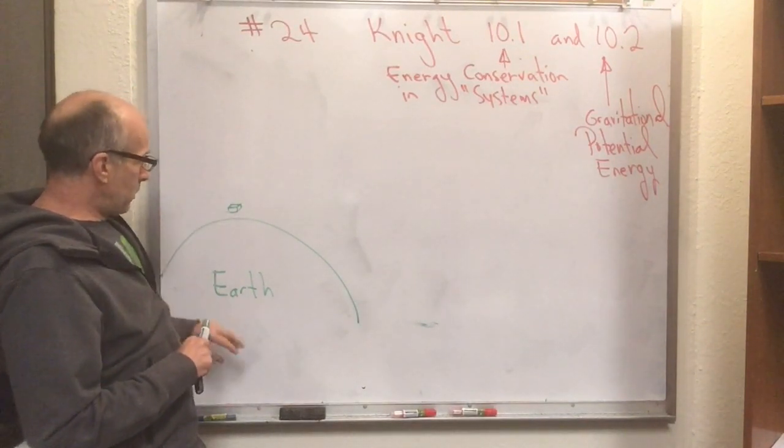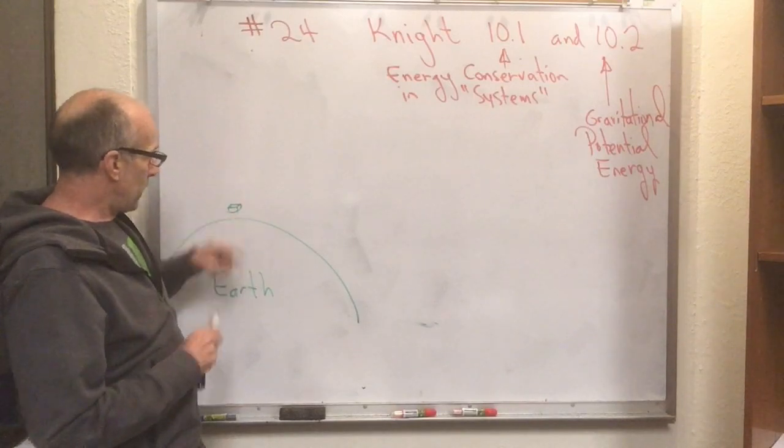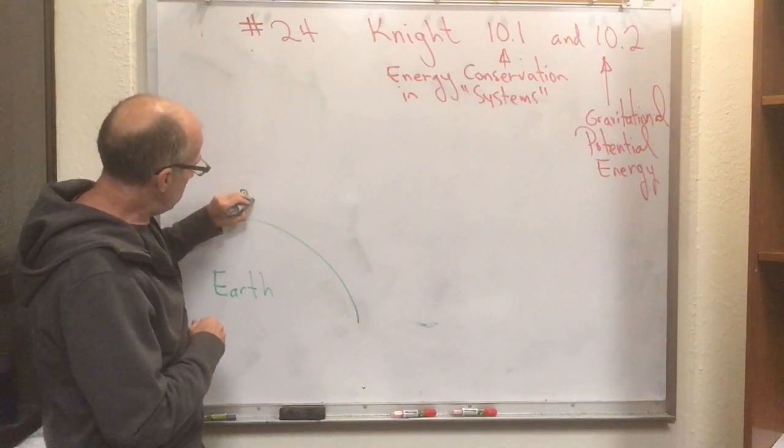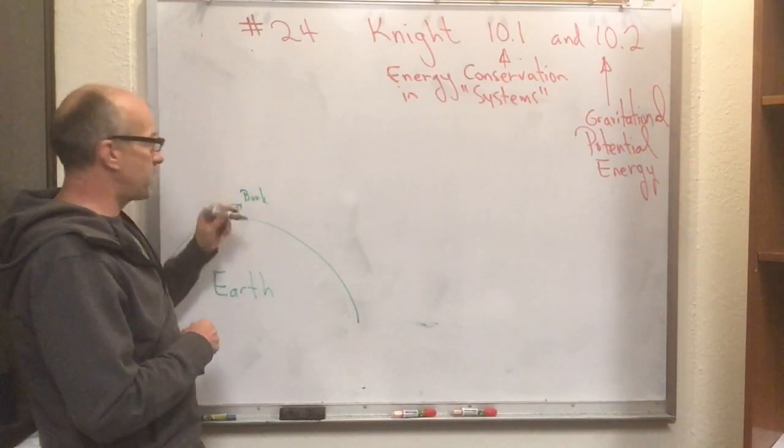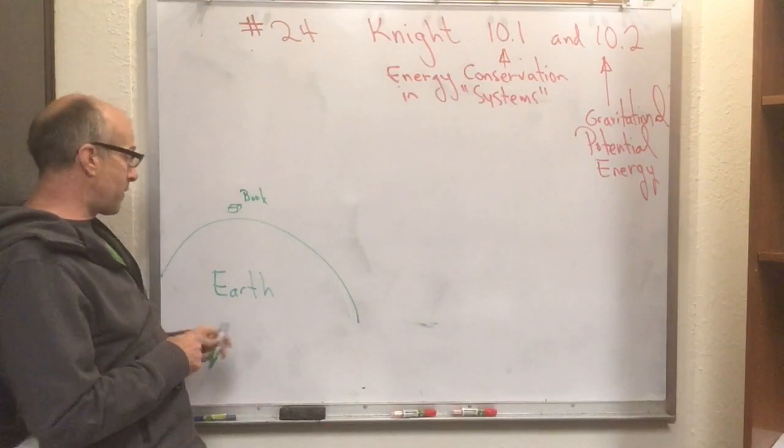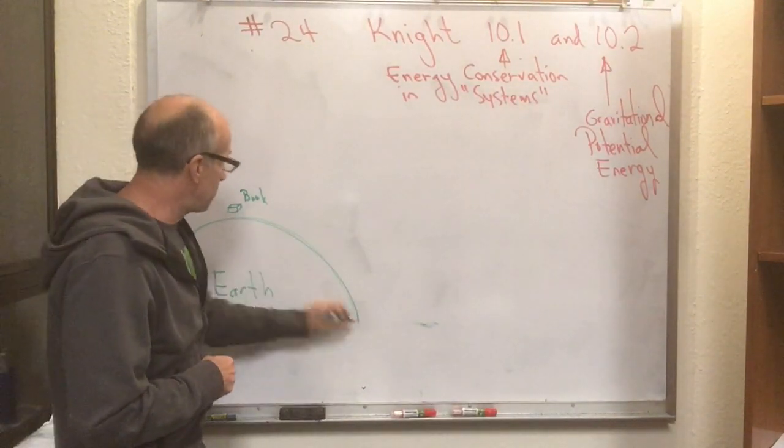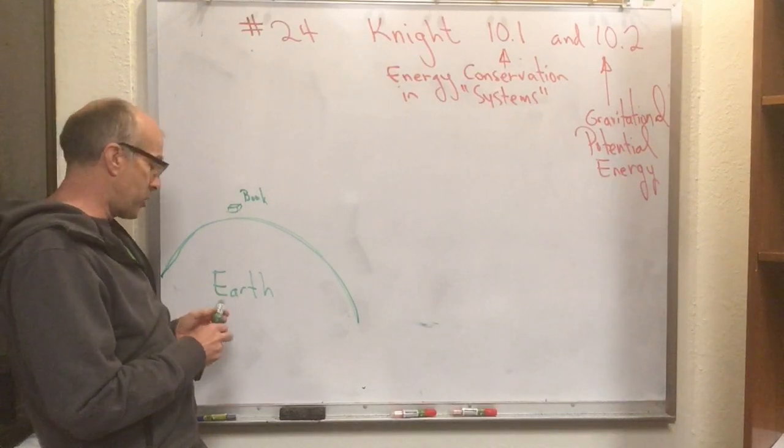So here's a picture of the Earth and a little book. Here's a little book, maybe 10 feet off the surface of the Earth. Obviously this is not drawn to scale. The surface of the Earth, if this was the scale of the book, would be far huger.